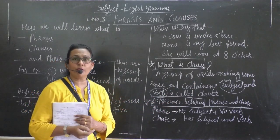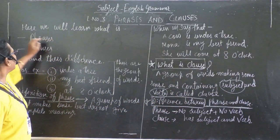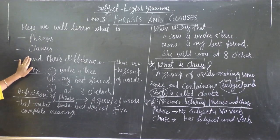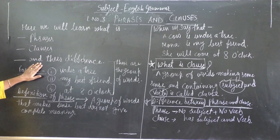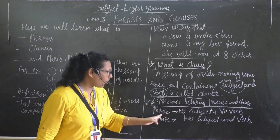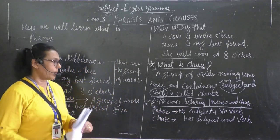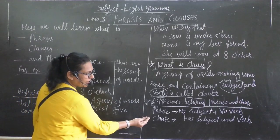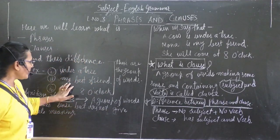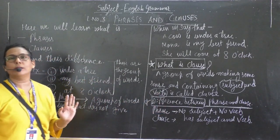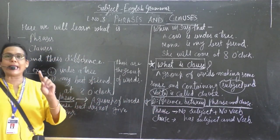Now, what is the difference? We have learnt phrases, we have learnt clauses. Now we will see the difference between phrase and clause. The difference is very easy. In a phrase, there is no subject, no verb — subject may be there, verb may be there, but not necessarily.